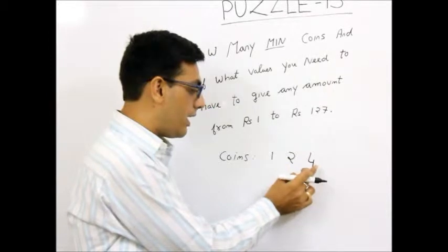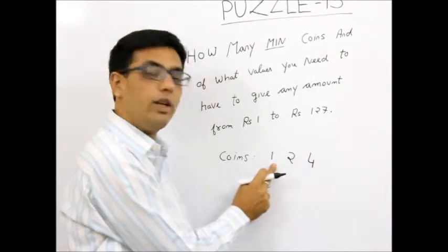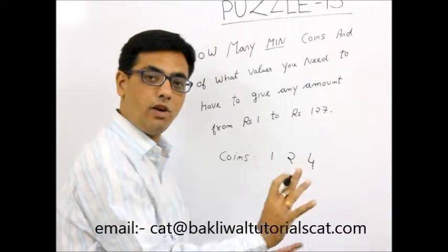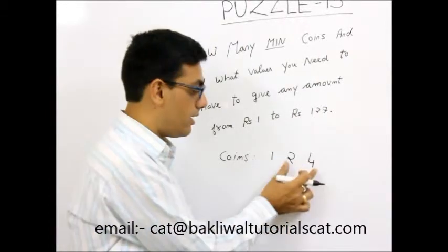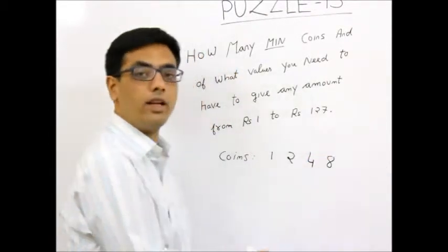Now using these coins, I can go till 4 plus 2, 6. 4 plus 1, 5. 4 plus 2 plus 1, 7. So till 7 rupees I have no problem. I can do by these 3 coins only. And therefore I would need an 8 rupee coin.